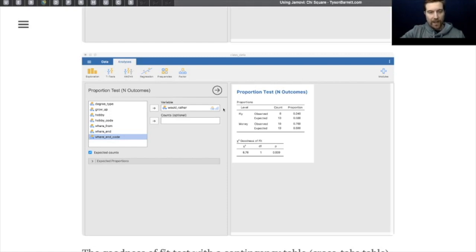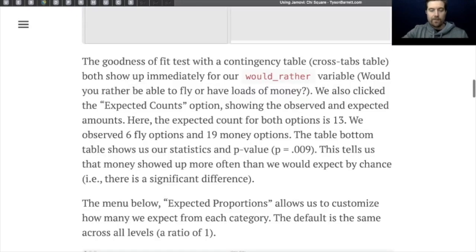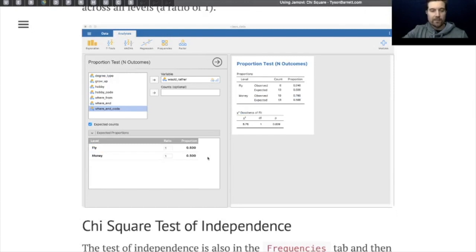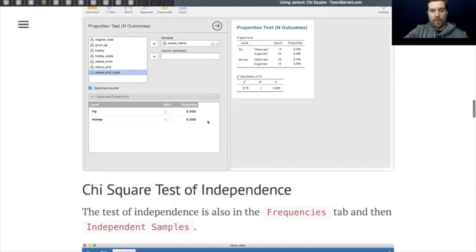These options pop up when we do that. And what we're going to bring over is a would you rather option where the two options as part of that question was fly and money. When we bring it over and when we click on expected counts, this is what we get. In this table, we see how many were observed. So six people said fly and 19 people said money and how much we expect. In both cases, we expect 13. The p-value down here is testing if the observed values are different than the expected. In this case, the p-value is significant. And so we would say no, they were not responded to the same.